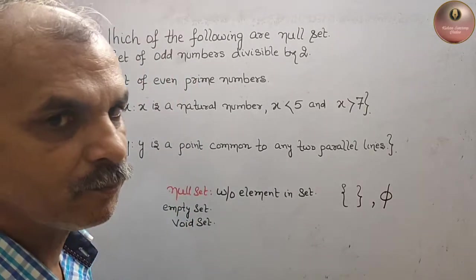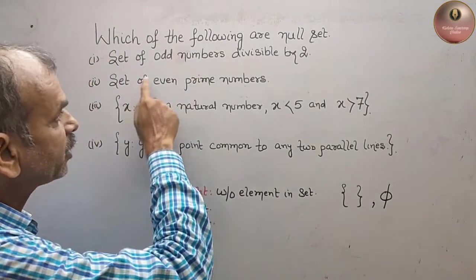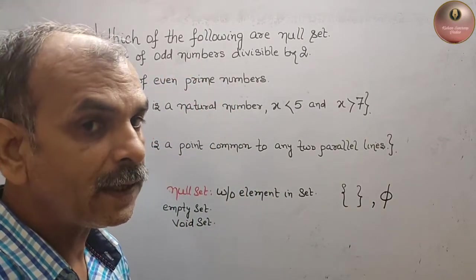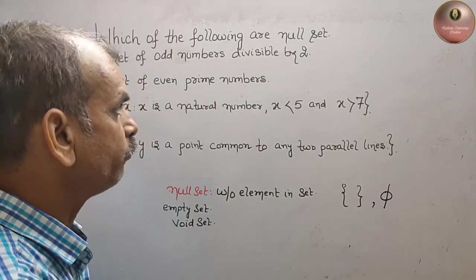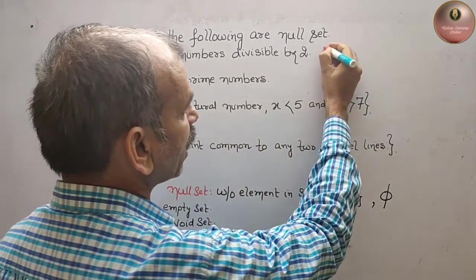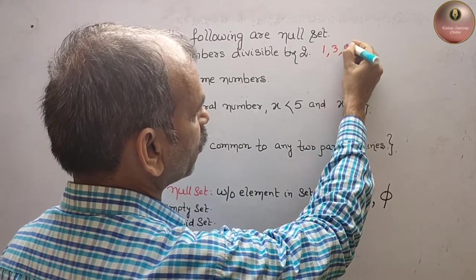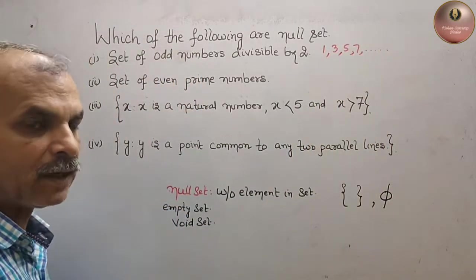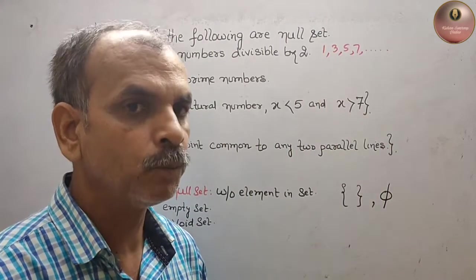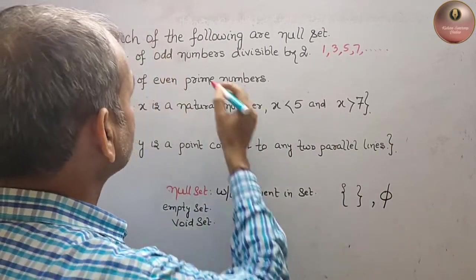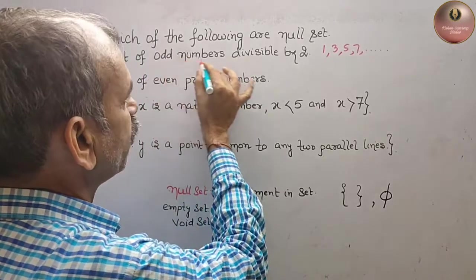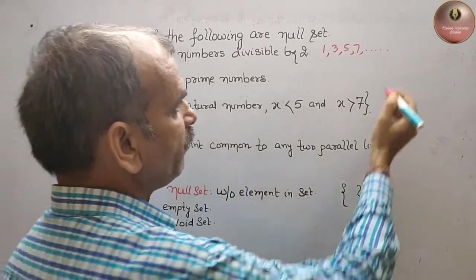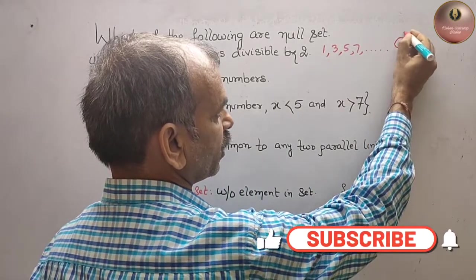Now we will go one by one. What they have given: set of odd numbers divisible by 2. We know that odd numbers are 1, 3, 5, 7, and so on. They are not the multiples of 2, so we can say this is your set of odd divisible by 2. That means this is your null set.